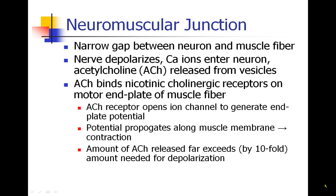As the nerve depolarizes, calcium ions enter into the neuron, and this causes acetylcholine to be released from vesicles that store the acetylcholine inside the nerve. The acetylcholine is released into the neuromuscular junction, and it binds to nicotinic cholinergic receptors that are on the motor end plate of the muscle fiber.